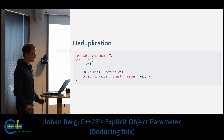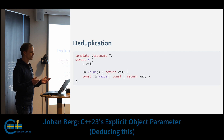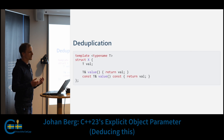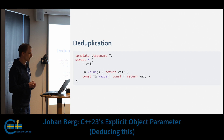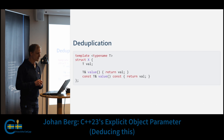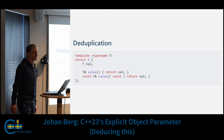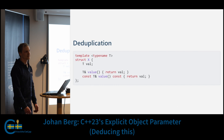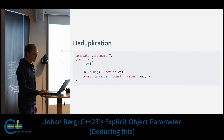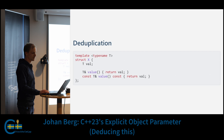So how can we use this feature to simplify some code? A common case is to have both a const version and a non-const version of a function. Here we have a function 'value' that returns a member of some type T — one version returning a mutable reference and another returning a const reference. There's a little bit of code duplication here that we'd like to remove, and we can do that by making the function value a function template and deducing the type of 'this'.